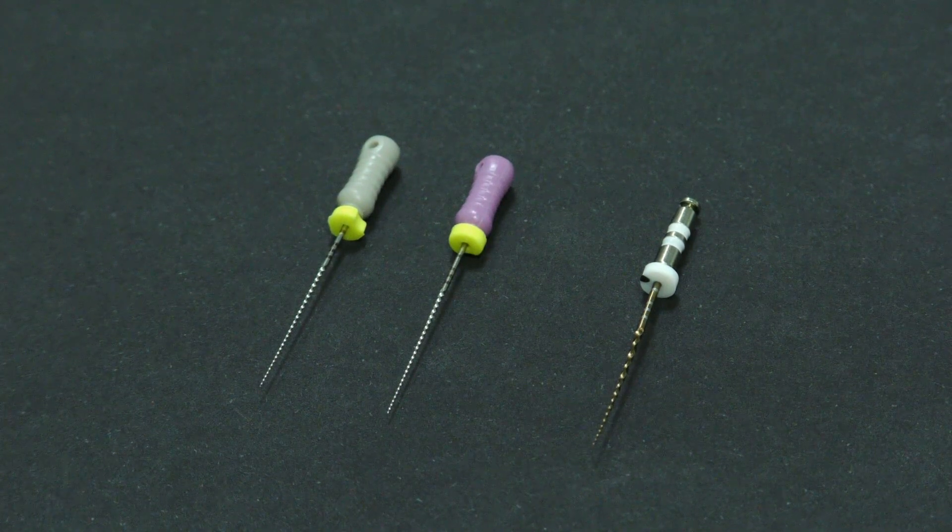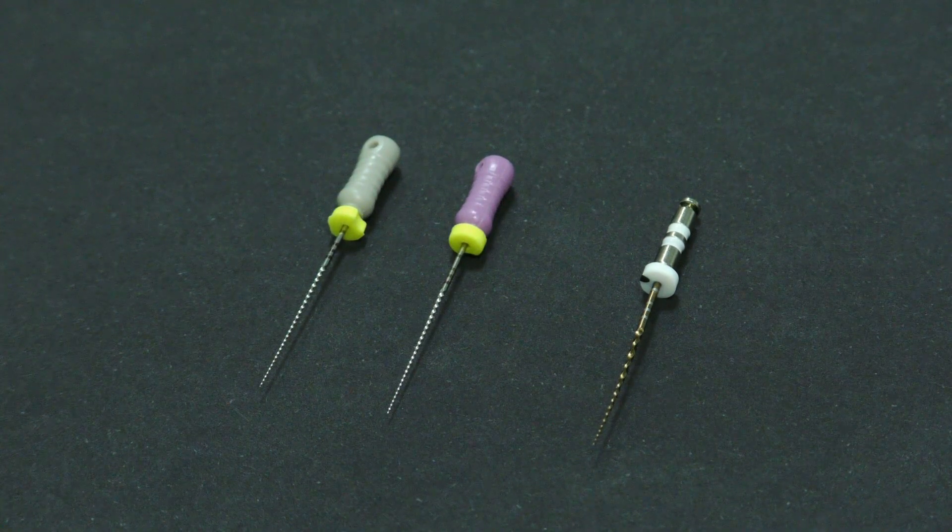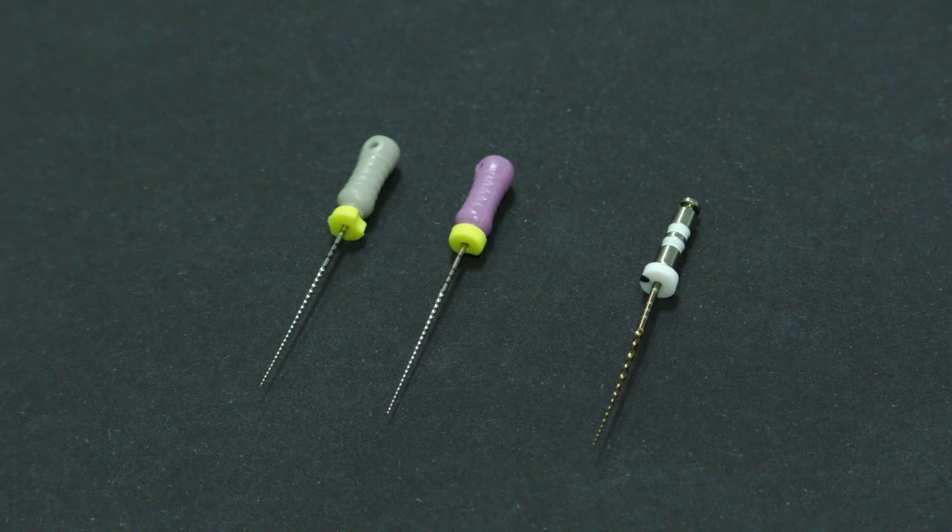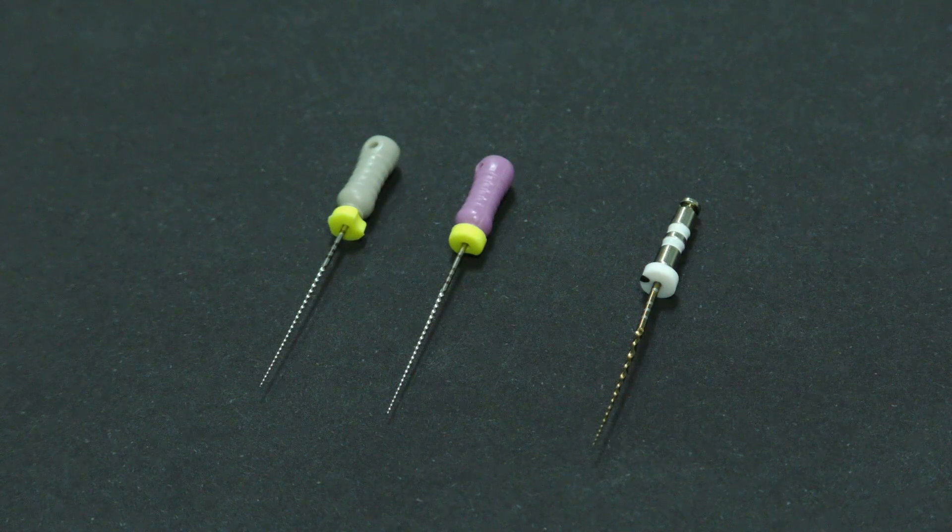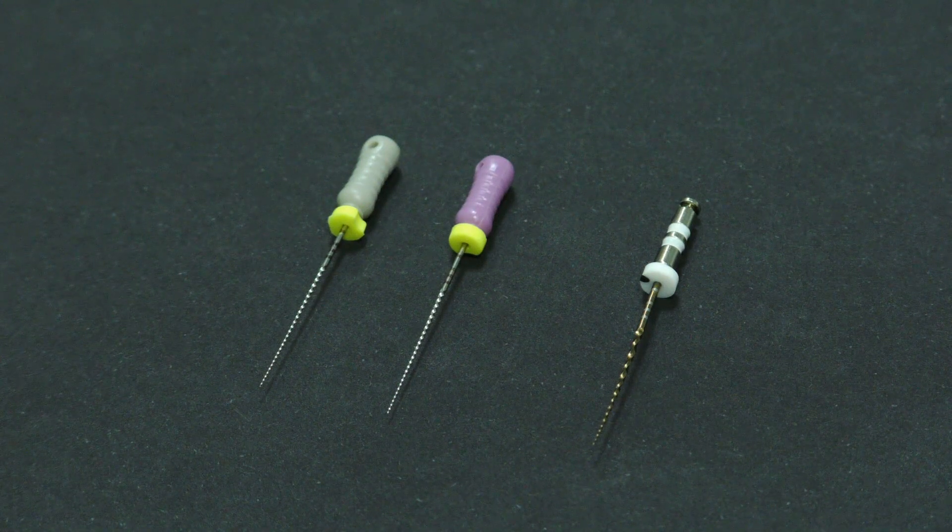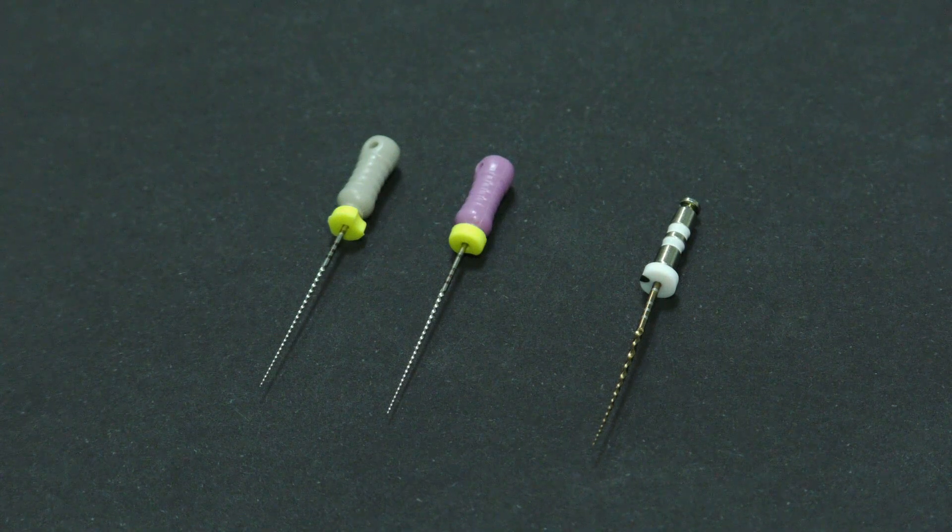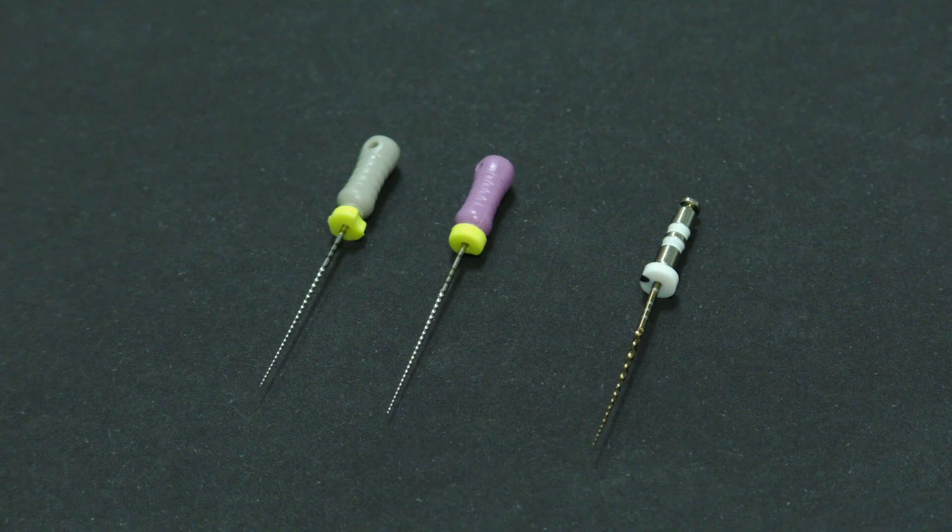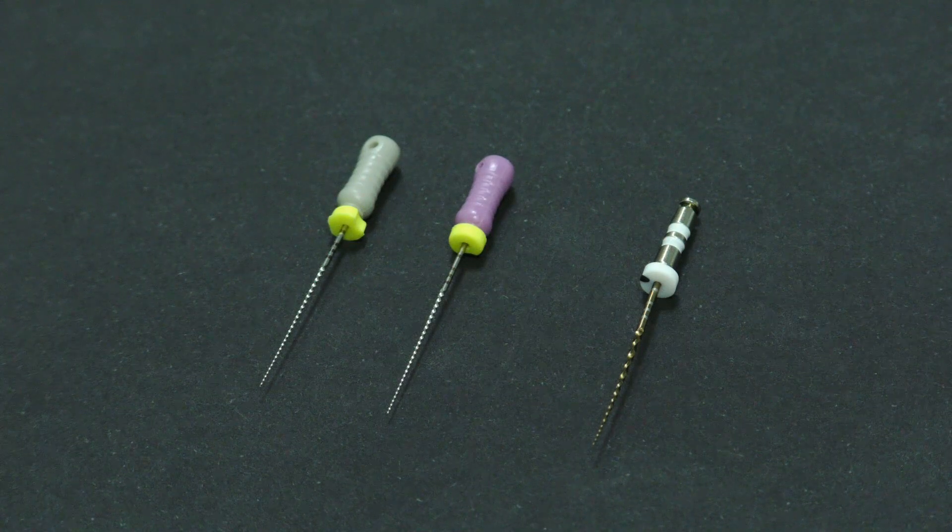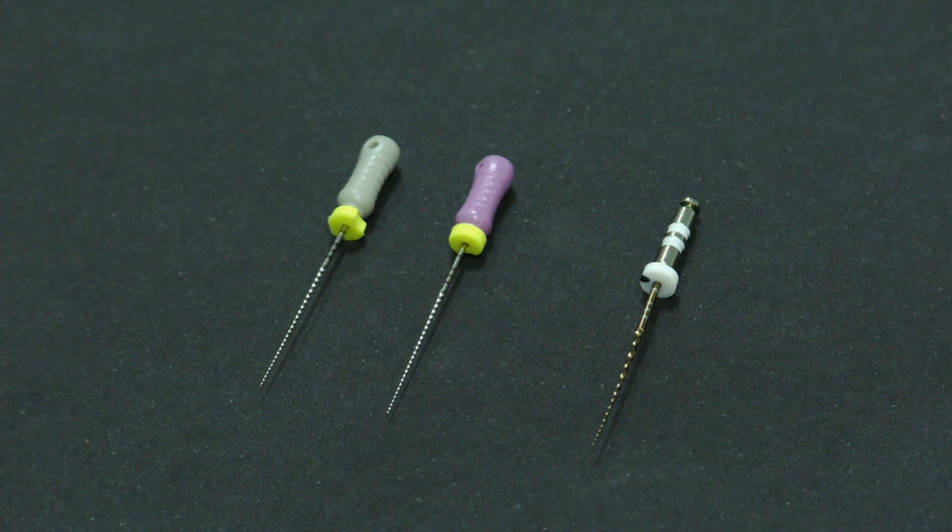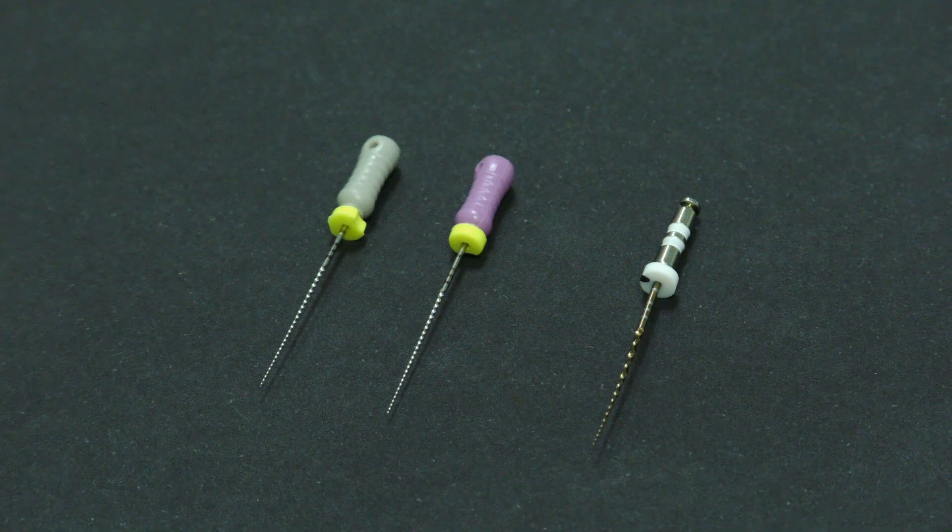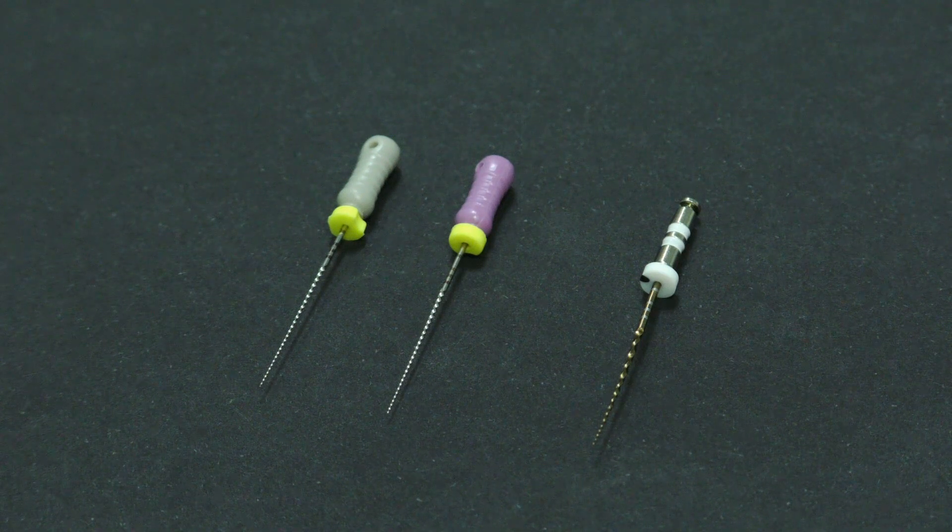This new set now includes one more machine glidepath file with size 13-04. This new smaller size glidepath file allows dentists to start shaping root canal with machine files immediately after getting through full length of canal by hand file 08-02 in easy canals, and file 10-02 in more difficult, severely curved or calcified canals.